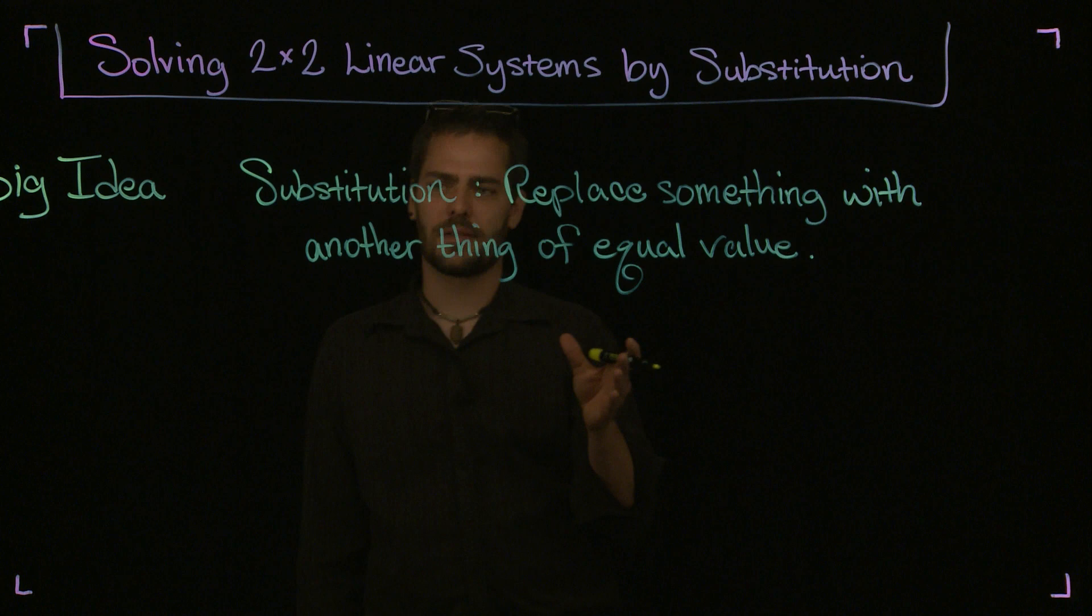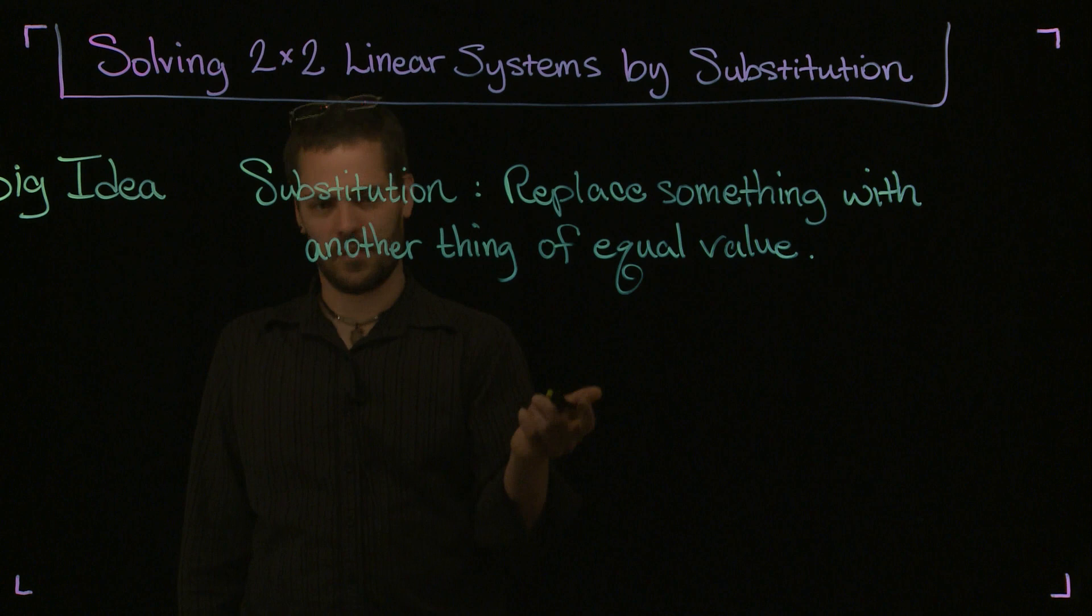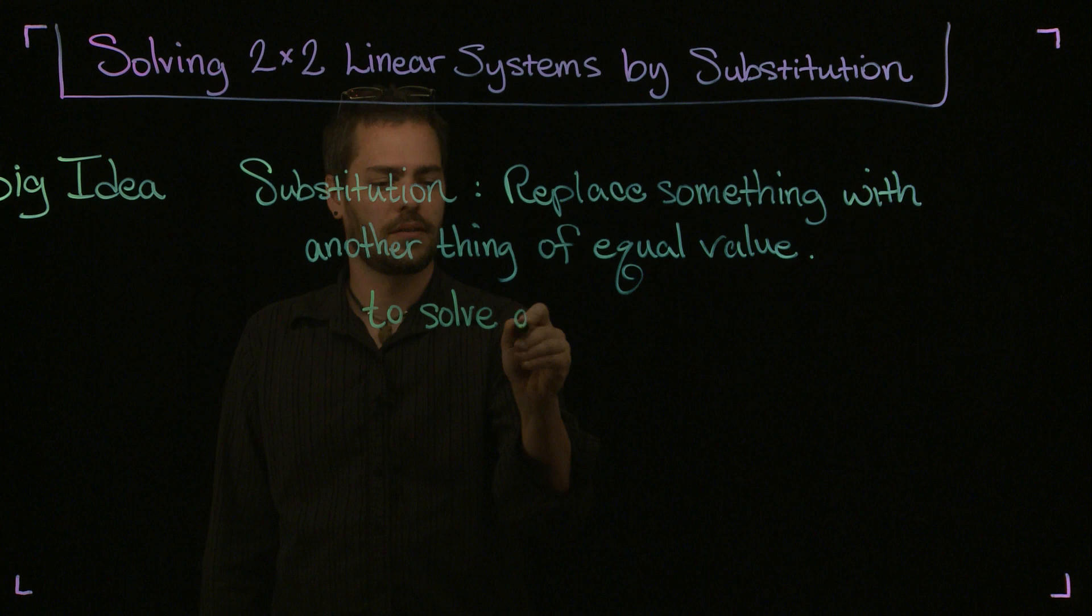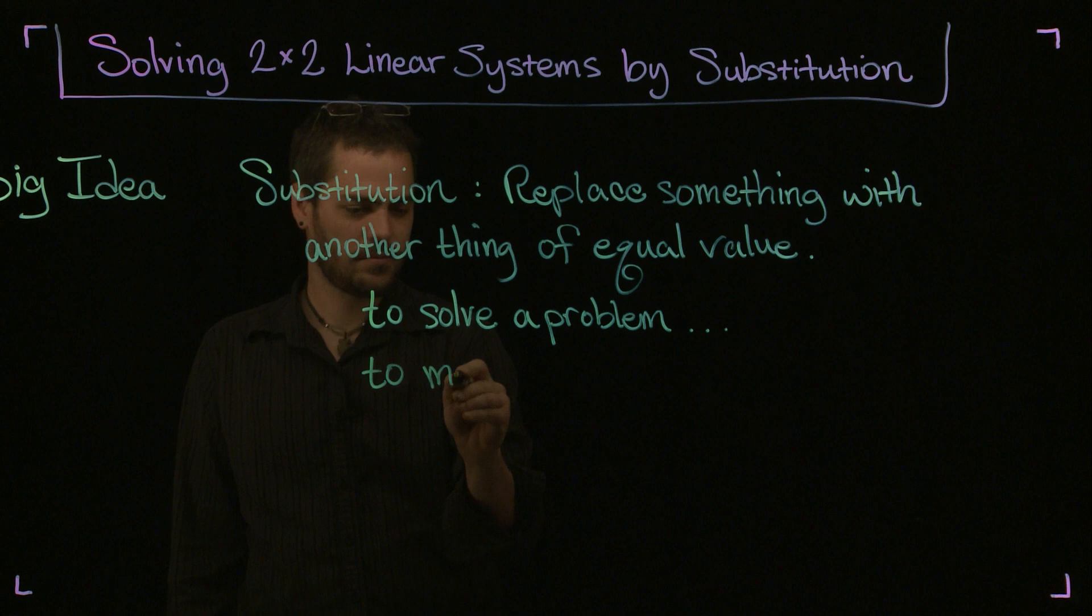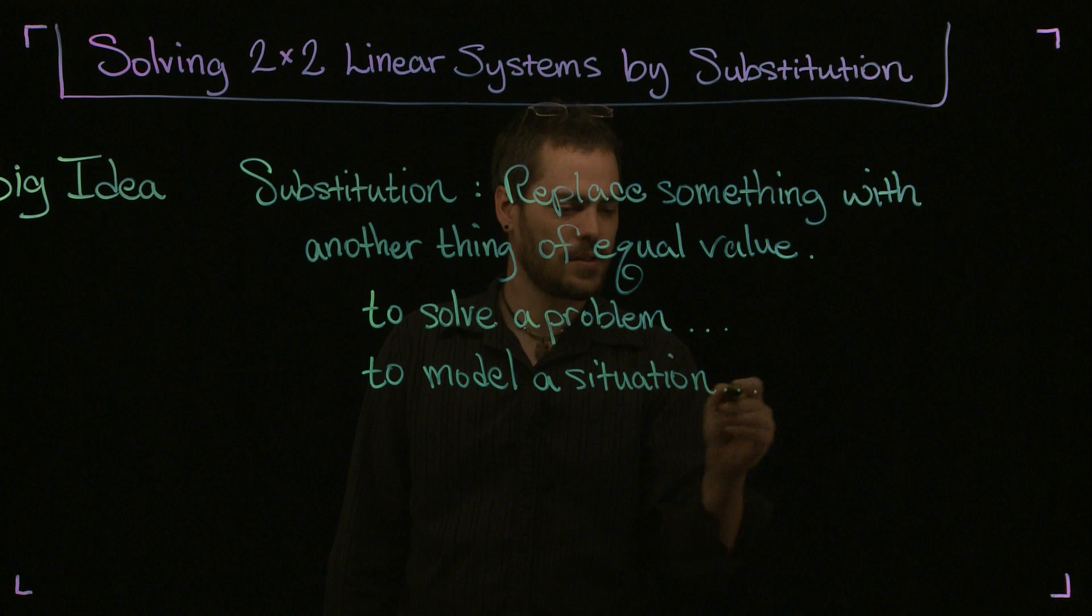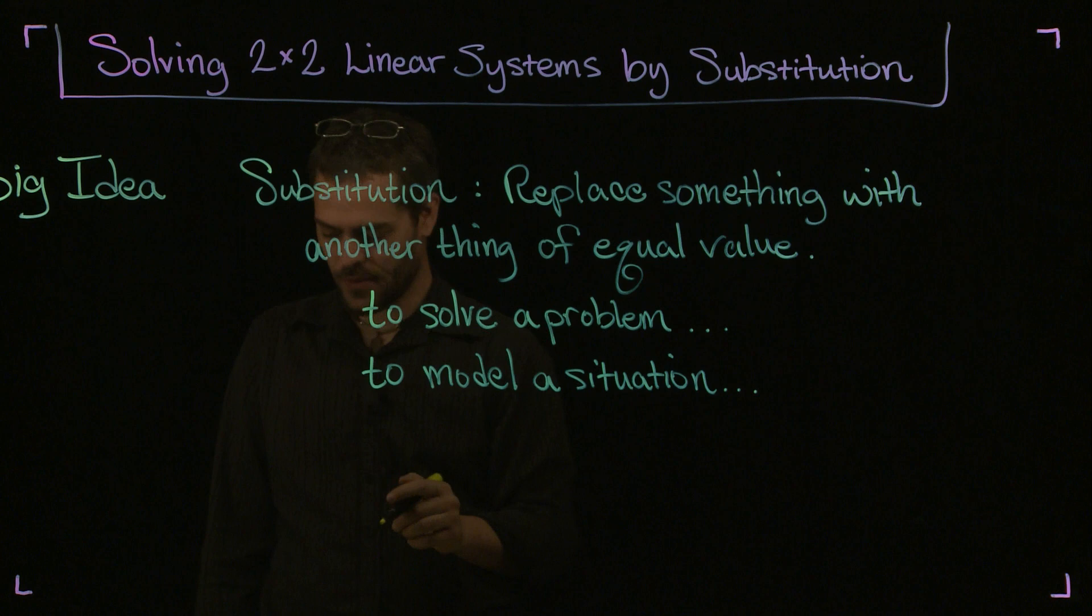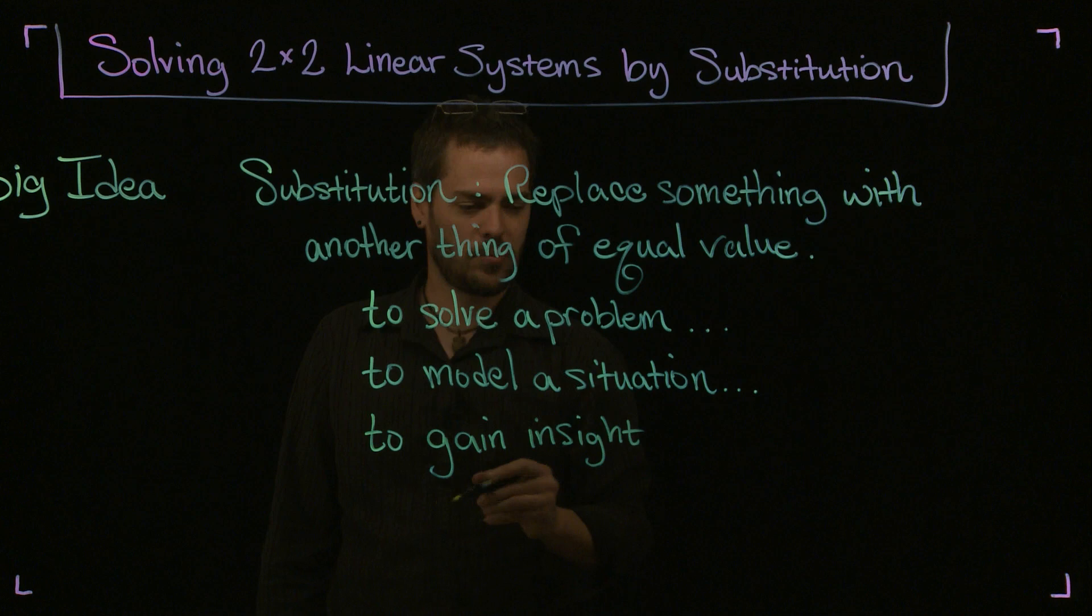So that's kind of the general obvious idea of substitution in life. In math, what does it refer to? Why would we replace something with something else of equal value? I suggest a few things. One, to solve a problem. To solve a situation mathematically. To model a situation. A lot of formulas can come around due to some sort of substitution and trying to reframe a problem and model it in a certain way.